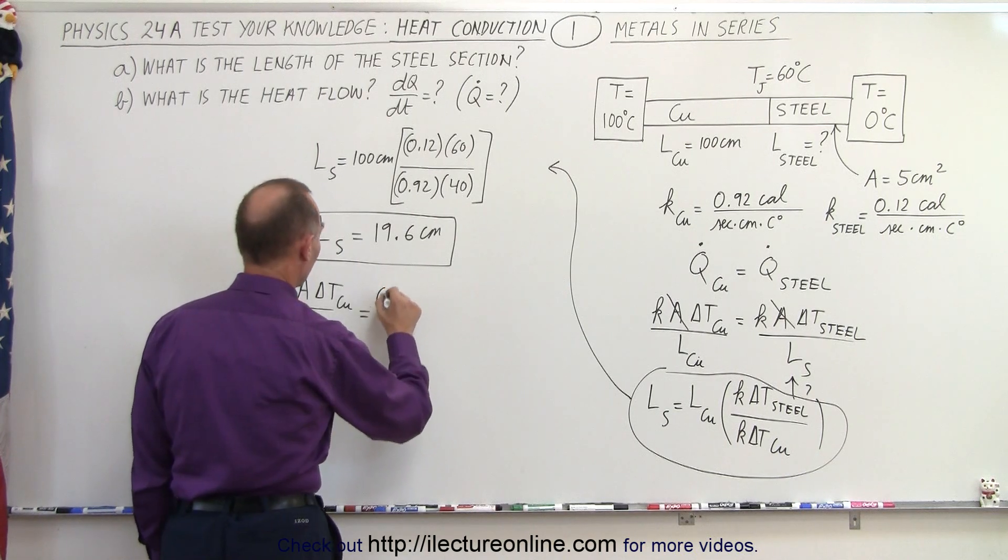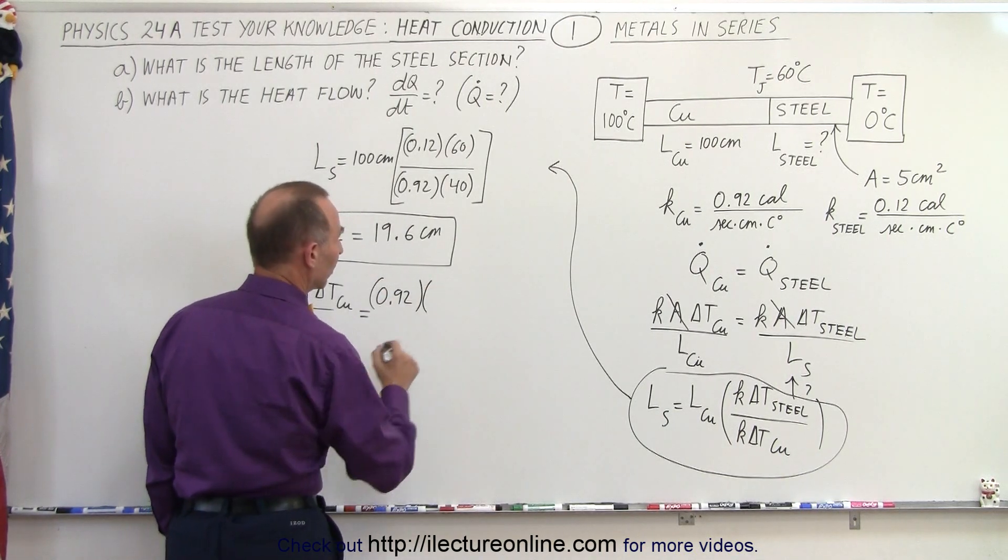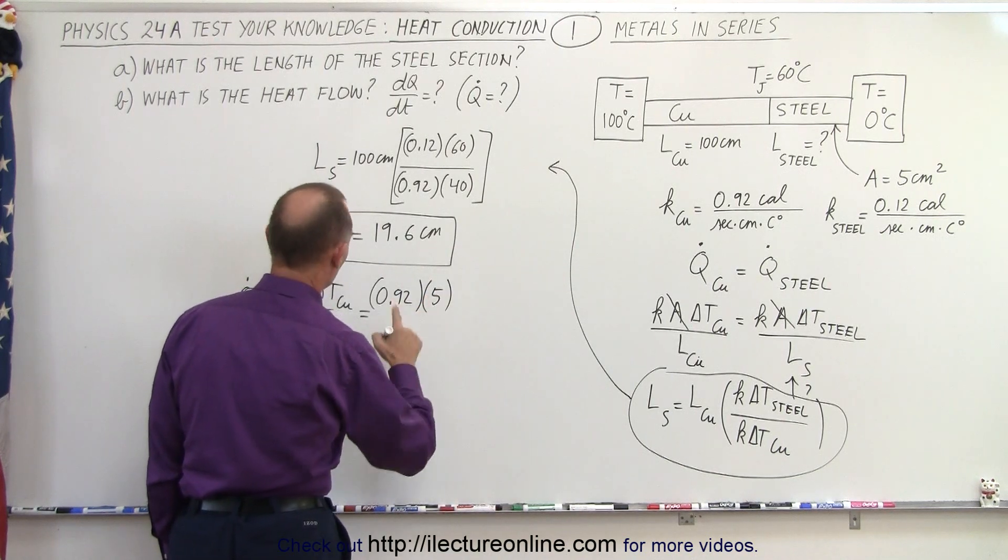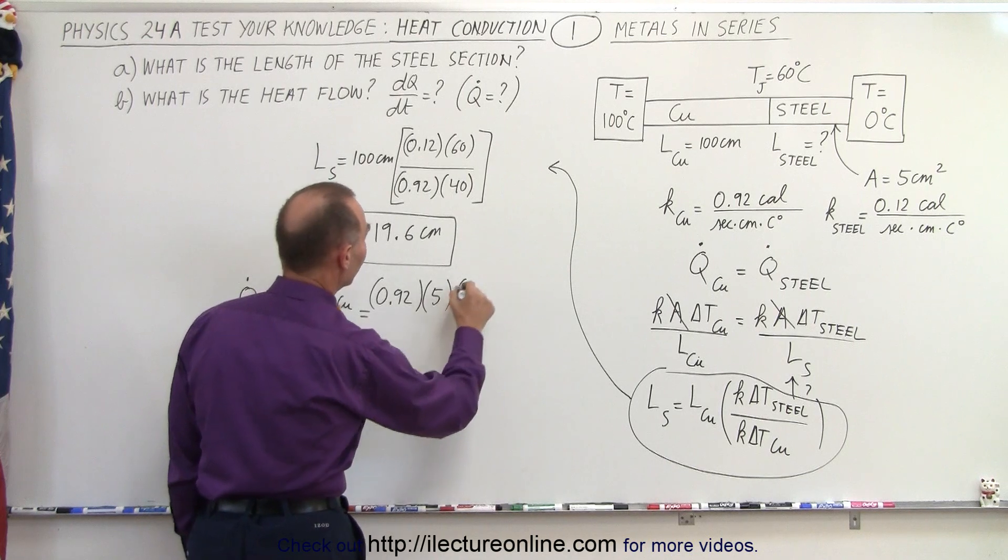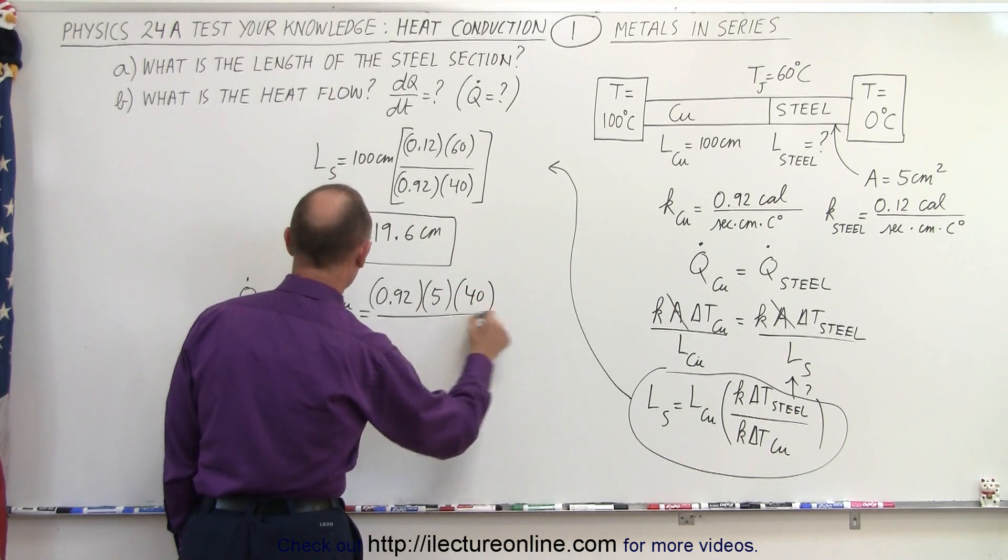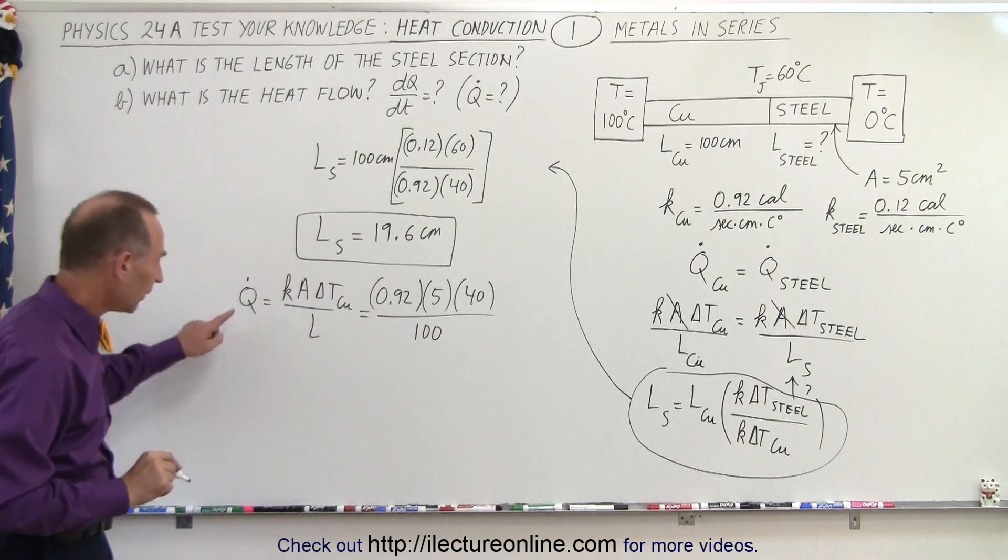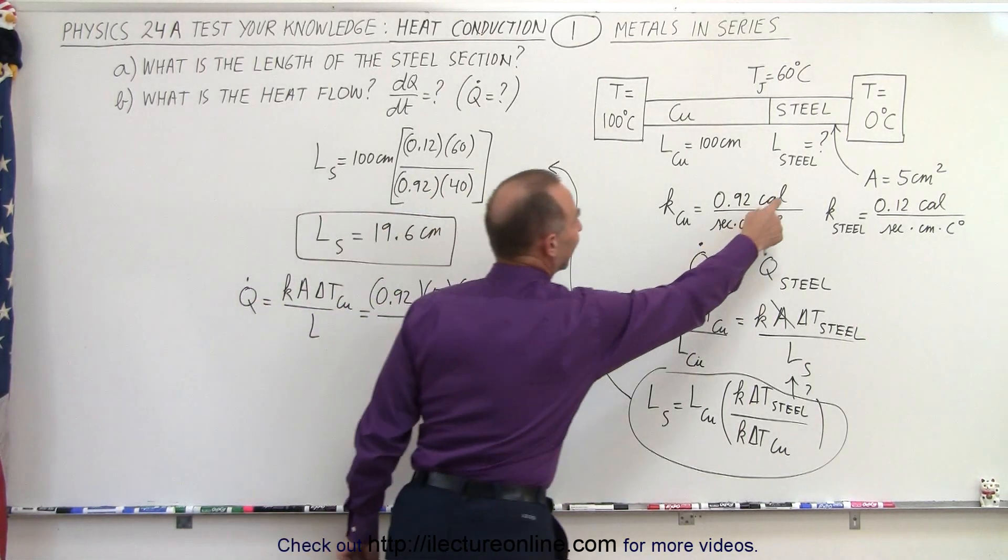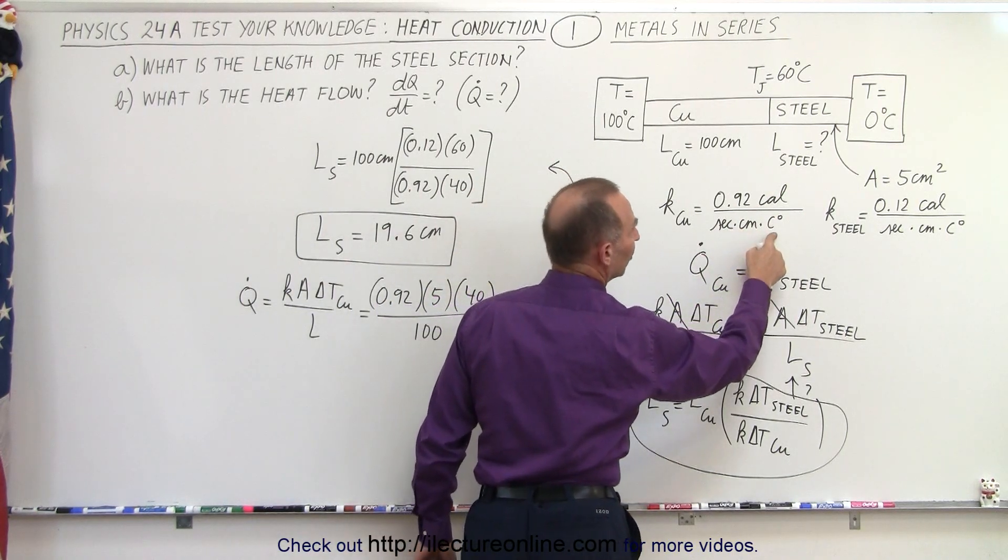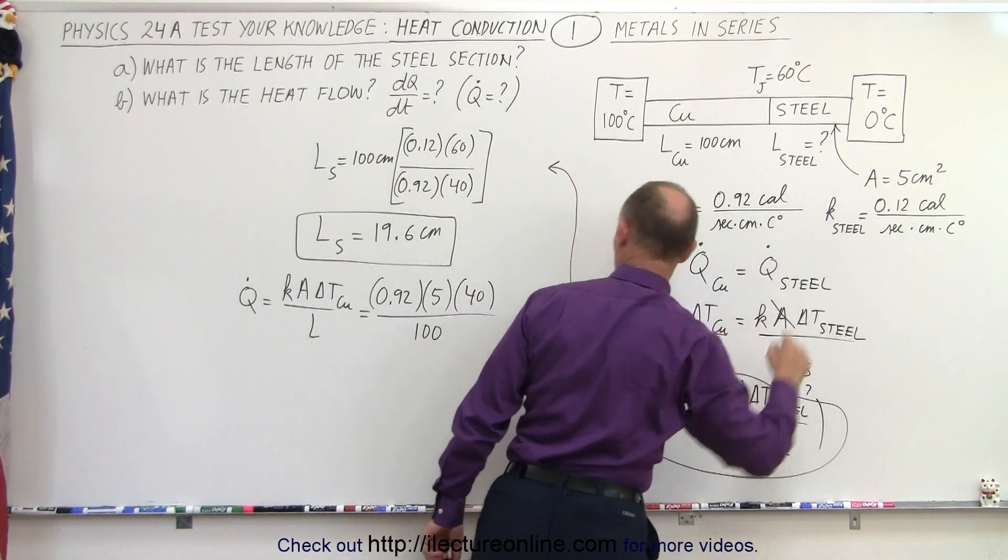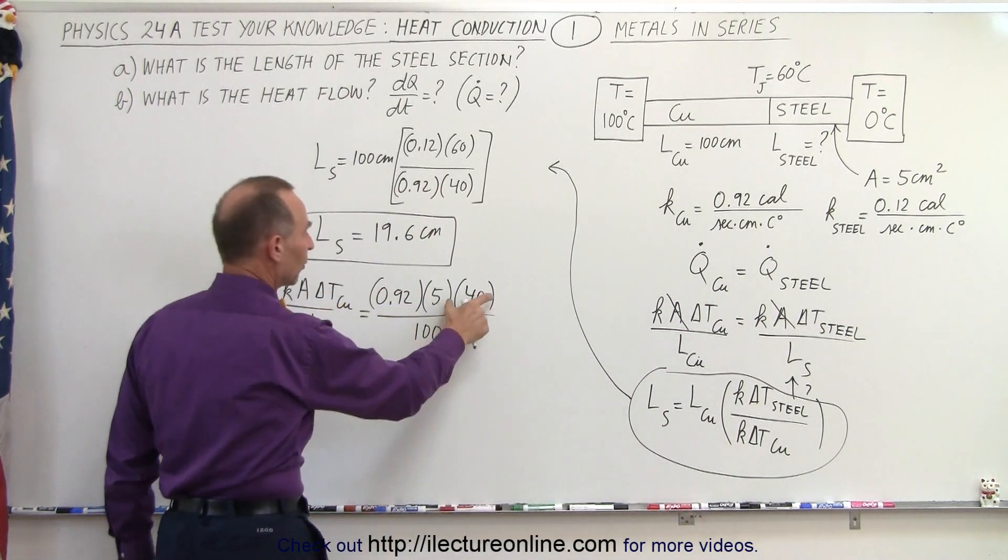So in this case, the k for copper is 0.92 times the cross-sectional area, which would be 5 square centimeters, times delta t for copper, which would be 40, all divided by the length, which is 100. The centimeters and centigrade degrees cancel out, so we're left with q dot in calories per second.